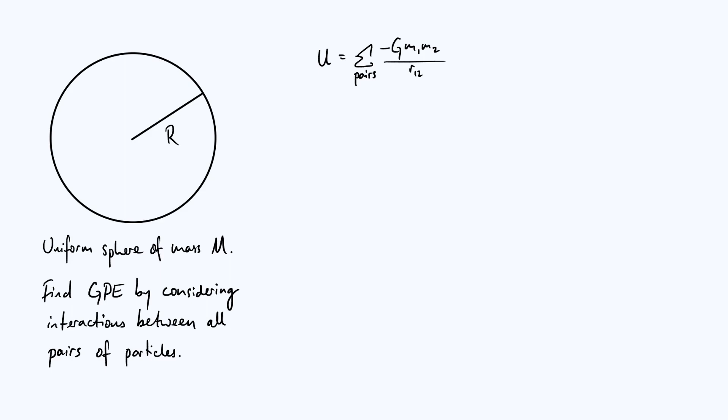When I say particles, by the way, you can imagine that we're talking about individual atoms, because each individual atom has a gravitational interaction with each other atom in the system. Or if you prefer to think of a truly continuous distribution, you can imagine just splitting up this solid sphere into a bunch of small elements, and each of those elements is a particle.